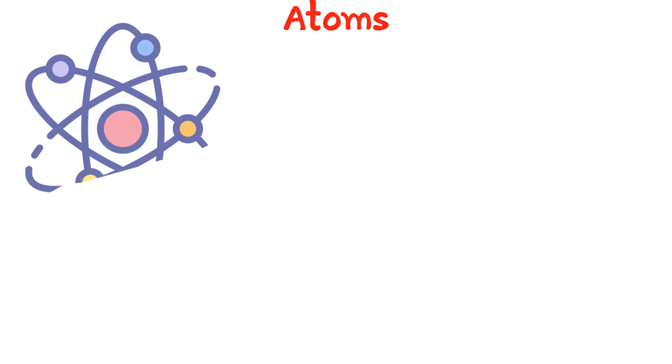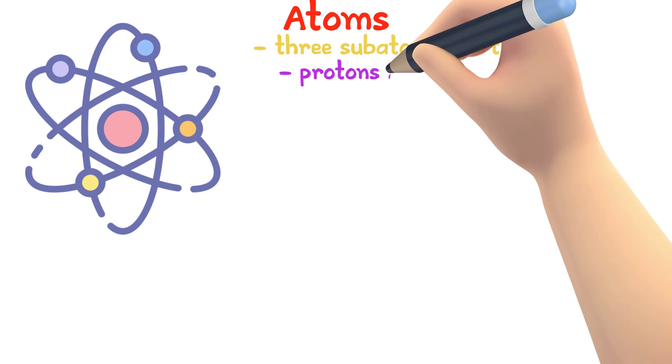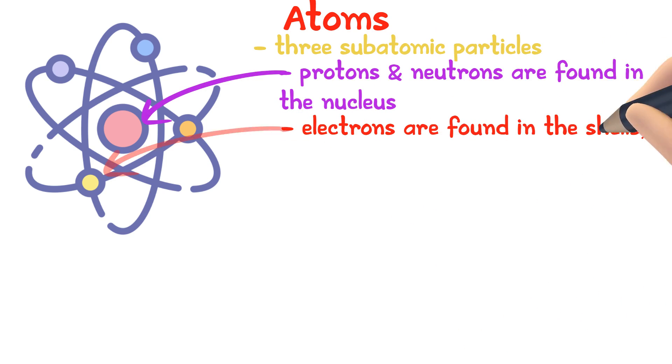This is an atom. An atom is made up of 3 different subatomic particles. Protons and neutrons are located in the nucleus and electrons are found in the shells orbiting the nucleus.